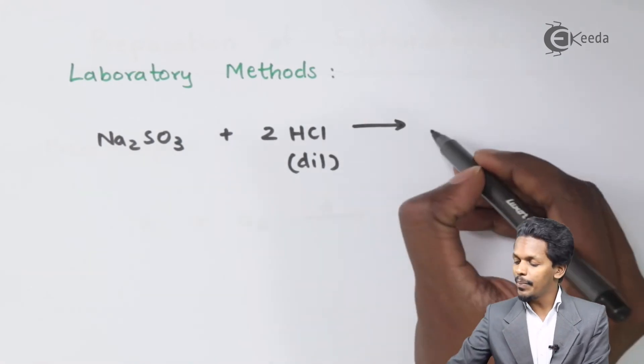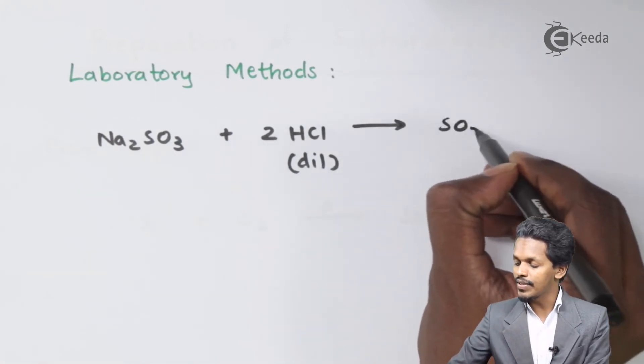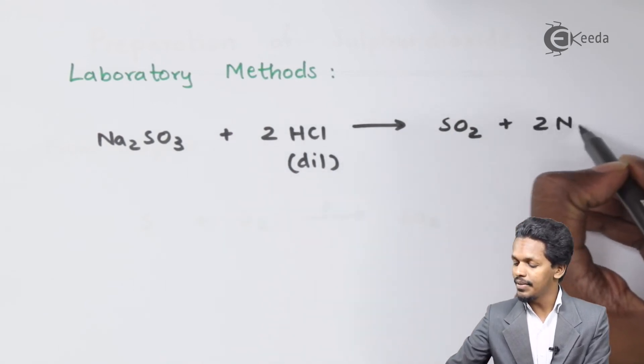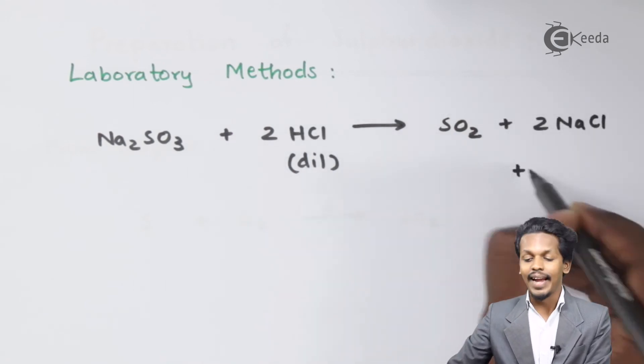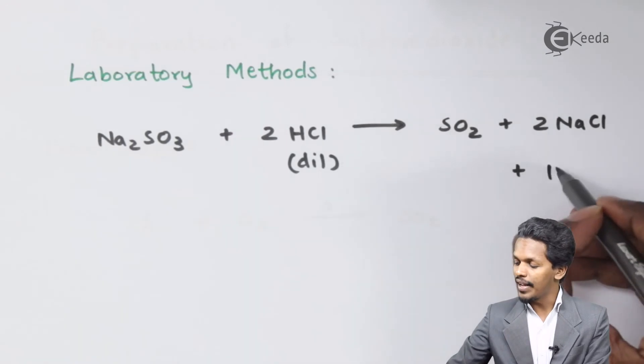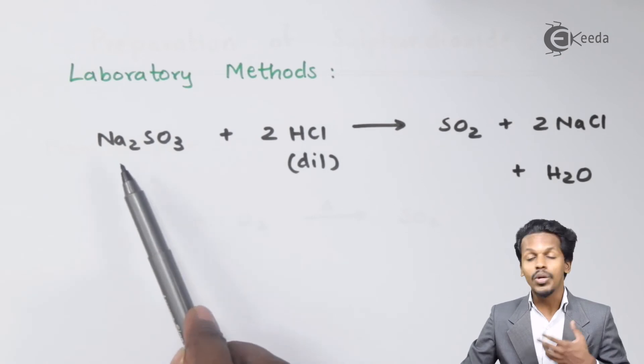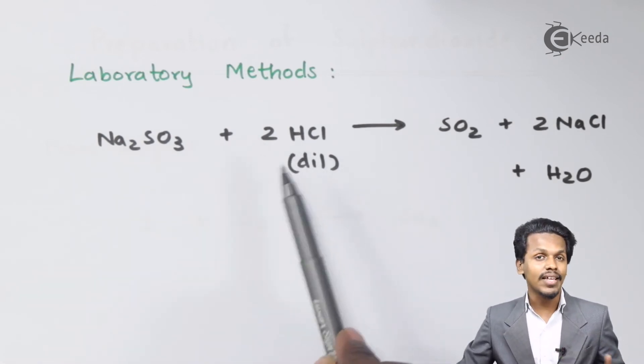The main product we get is sulfur dioxide (SO₂), along with 2 moles of NaCl and 1 mole of H₂O. This is how we obtain SO₂ in the laboratory by treating sodium sulfite with dilute HCl.